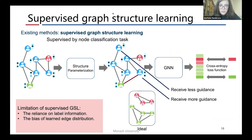The second limitation is the bias of learned edge distribution caused by the semi-supervised setting of node classification. Under the semi-supervised setting, the connections around label nodes will receive more guidance during structural learning, while the connections far away from the label nodes would receive less. Such bias will lead to the imbalanced edge distribution of the learned structure.